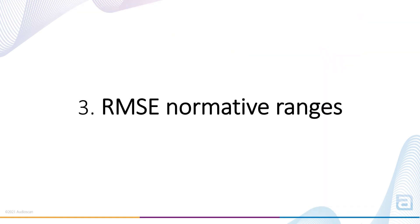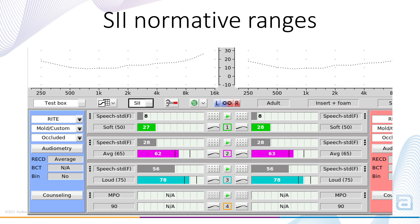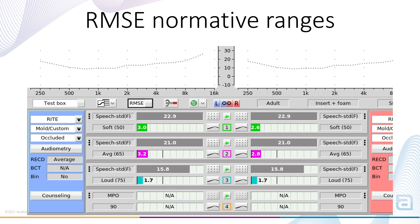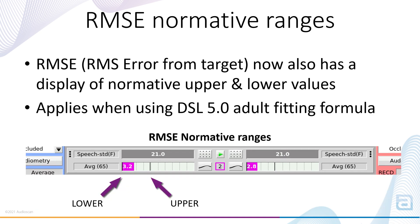RMSE normative ranges. A few releases ago the Verifit 2 added normative data for the speech intelligibility index, appearing as upper and lower limits in the SII Audit Bar when DSL child or DSL adult is the selected fitting rationale. The Audit Bar display can also be used to show the RMSE, or root mean square error from target. This value indicates the overall distance from fitting targets in the selected rationale and is based on values at 500 Hz, 1, 2, and 4 kHz. In the 2021.1 software release, normative ranges have also been added to RMSE for when DSL adult or child formulas are in use.